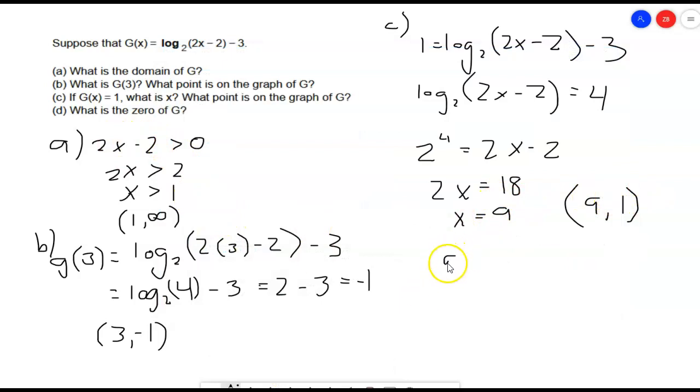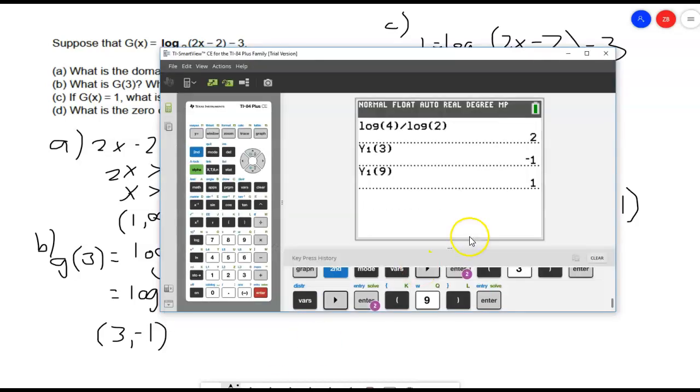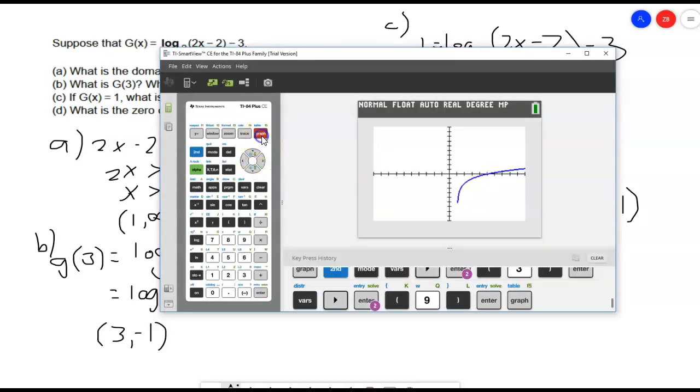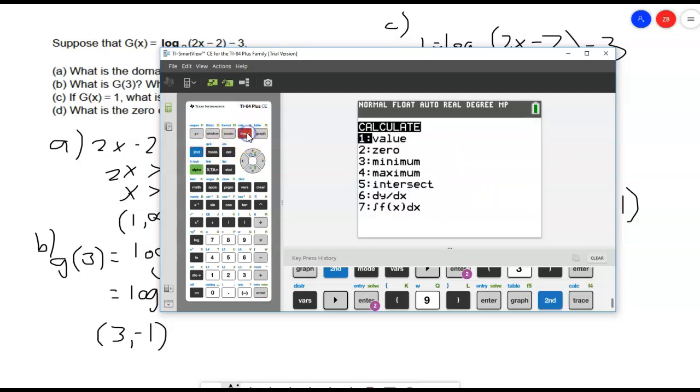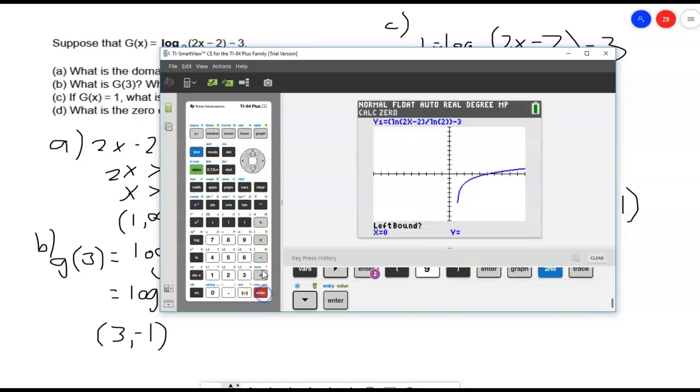And then the last thing, d, says what is the 0 of g? And that means what's the 0 of this function? Where does it cross the x axis? And I can either use my 0 function like we've done before in my calculator. Or I can just set this equal to 0 instead of 1. This time, I'm going to use my calculator just because I kind of want to do a mix of both ways. So, if I do that, I go to my graph. I go to my second trace, which is the calculate. I want to calculate my 0.